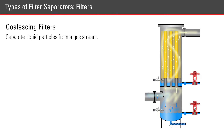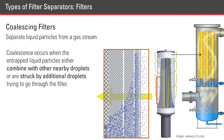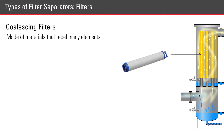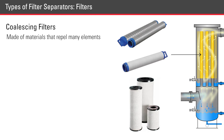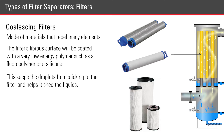Coalescing filters separate liquid particles from the gas stream. Coalescing occurs when the entrapped liquid particles either combine with other nearby droplets or are struck by additional droplets trying to go through the filter. Coalescing filters are made of materials that repel many elements. The filter's fibrous surface will be coated with a very low-energy polymer such as fluoropolymer or silicone, which keeps the droplets from sticking to the filter and helps it shed the liquids.